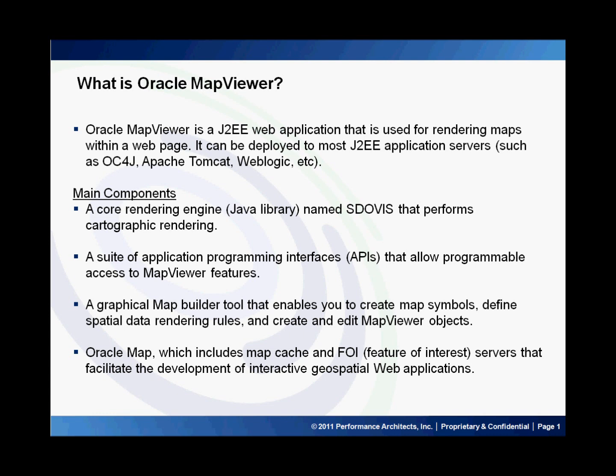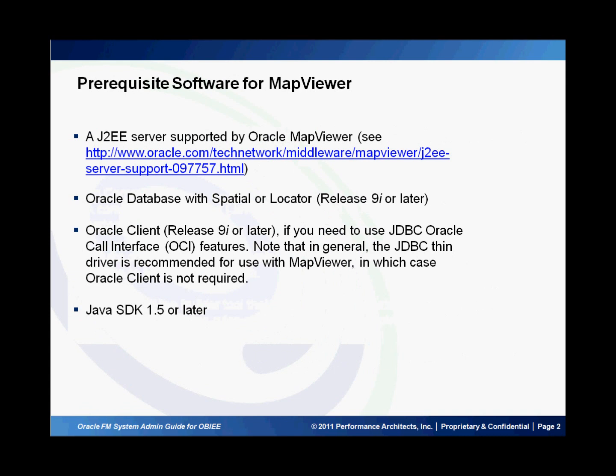The third component is a graphical map builder tool that enables you to create map symbols. And finally, there is Oracle Maps, which includes map cache and FOI. The prerequisites for the map viewer are a J2EE server like WebLogic, Oracle client 9 or later, Java SDK 1.5 or later, and Oracle Database with Spatial or Locator. Oracle Locator is a component of the Oracle database and is actually a cut-down version of Oracle Spatial, provided free with all standard and enterprise database editions.